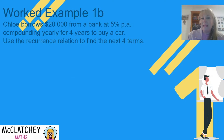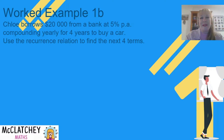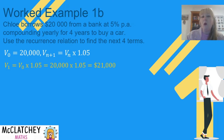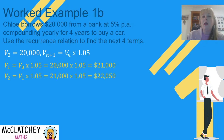Next, in exercise 1B, we use that recurrence relation to find the next four terms. Recurrence relations are great for finding a few terms but not ideal for finding values well into the future. Starting with V0 equals $20,000, we multiply by 1.05 to get V1 equals $21,000. That's the amount owing to the bank at the end of the first year. Then 21,000 times 1.05 — we calculate 5% of that and add it on — giving V2 equals $22,050.